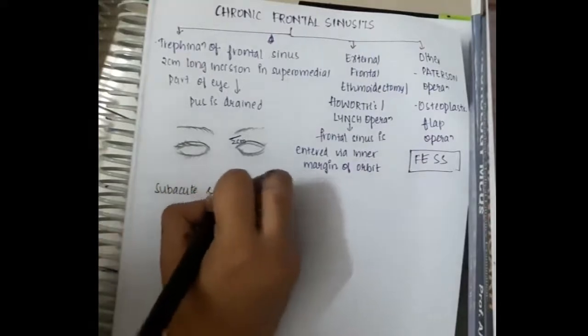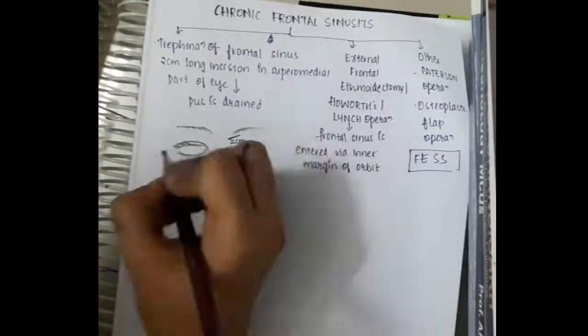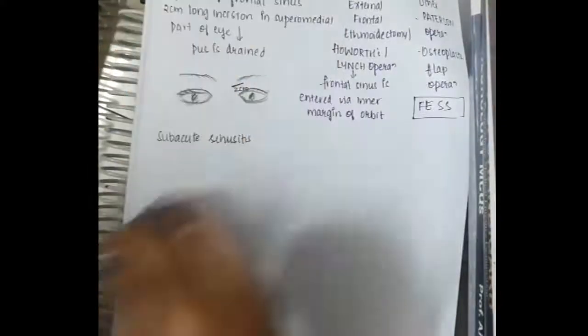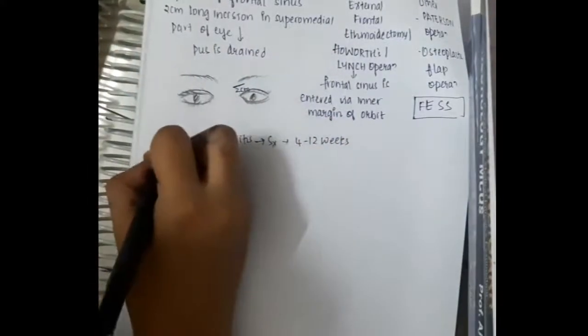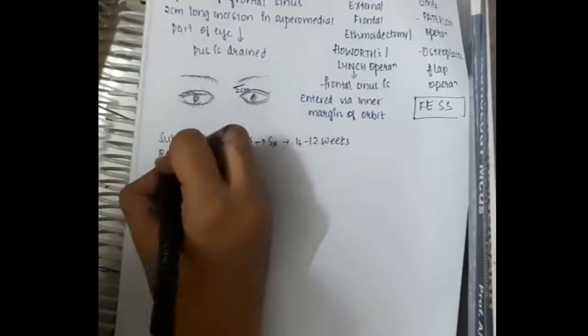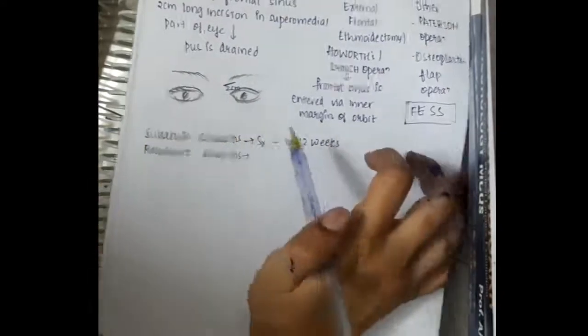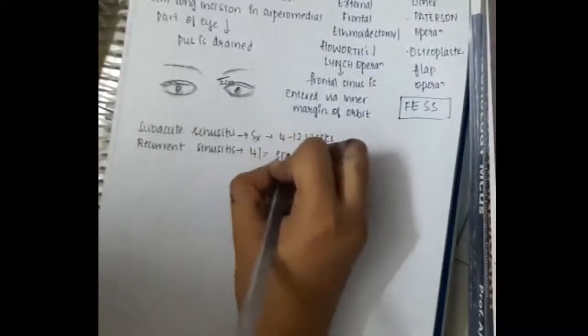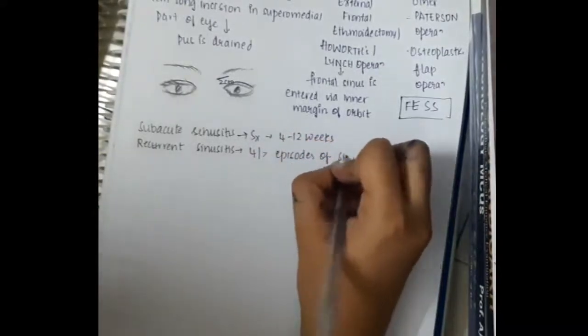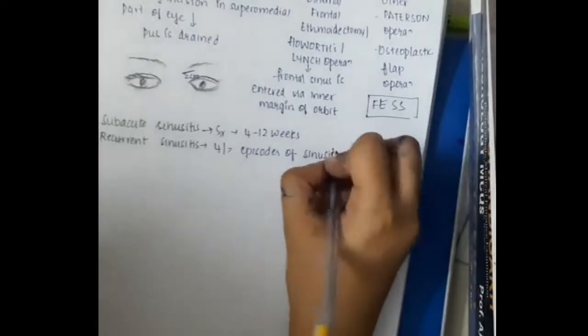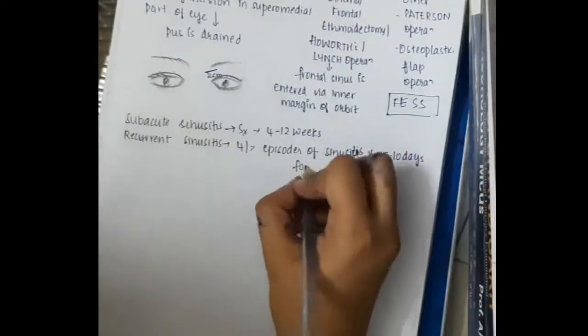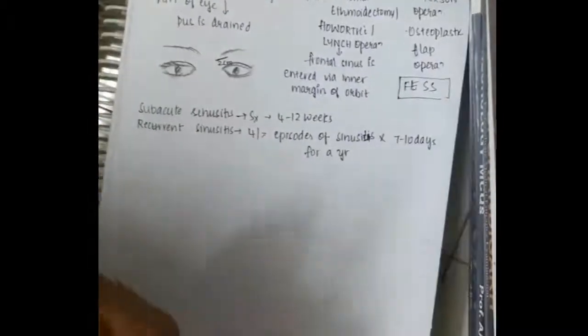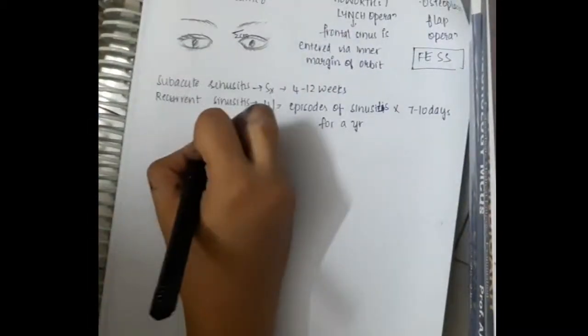Then we have sub-acute sinusitis. We have the symptoms of sub-acute sinusitis are 4 to 12 weeks. If symptoms persist for 4 to 12 weeks, that is sub-acute sinusitis. In recurrent sinusitis, if there are more than 4 episodes of sinusitis for 7 to 10 days in a year, then we call it as recurrent sinusitis.